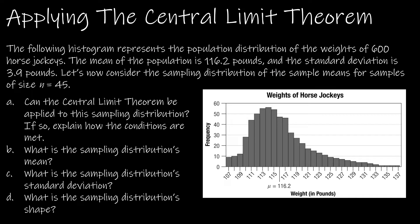Let's take a look at an example. Here we have a histogram that represents the population distribution — keyword: population distribution — of the weights of 600 horse jockeys. The mean of the population is 116.2 pounds, and the standard deviation of the population is 3.9 pounds. We're going to look at what would happen if we took samples of 45 horse jockeys at a time and found the average weight. The first question is: can we use the central limit theorem, and if so, why?